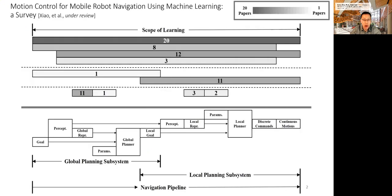First of all, I would like to share with you our recent survey paper on using machine learning for motion control in mobile robot navigation. This is a simplified version of a figure from the survey. Let me walk you through this still quite complicated figure to see how roboticists have used machine learning for motion control in mobile robot navigation.